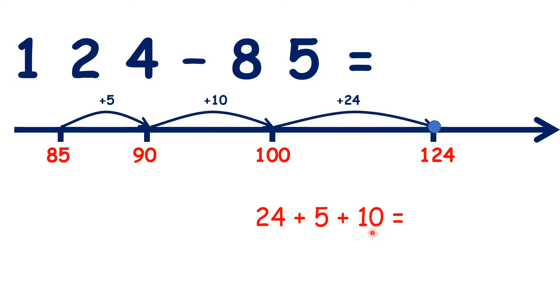So we can work out 29 plus 10, because 24 plus 5 gives us 29. And I'm adding 10 last, because adding 10 to a number is really easy. 29 plus 10 is 39.